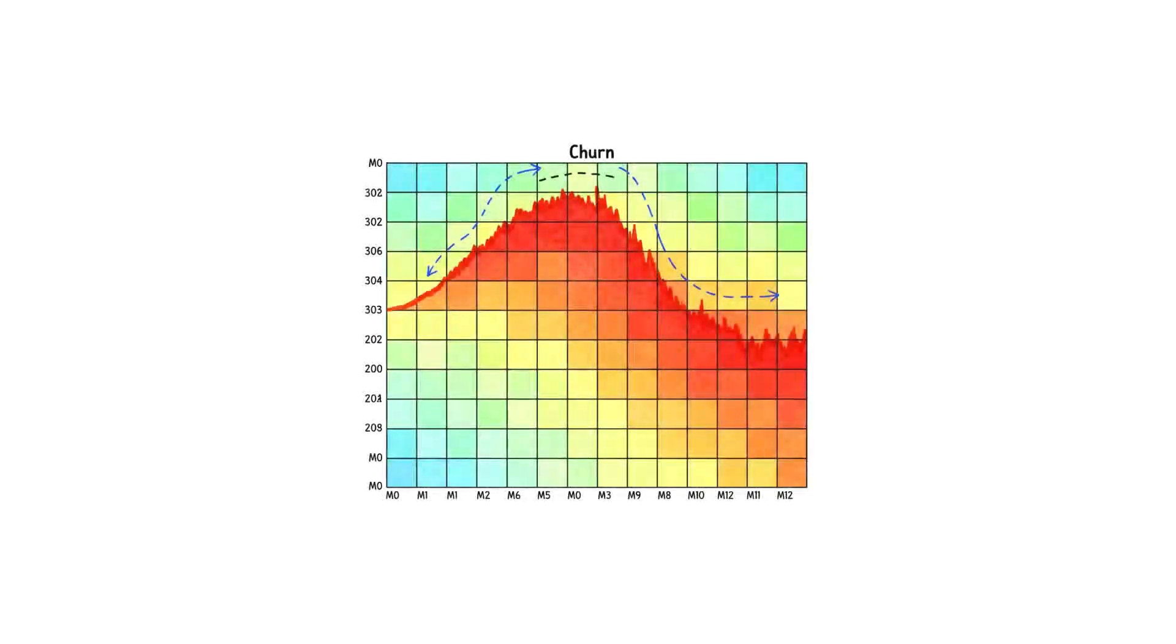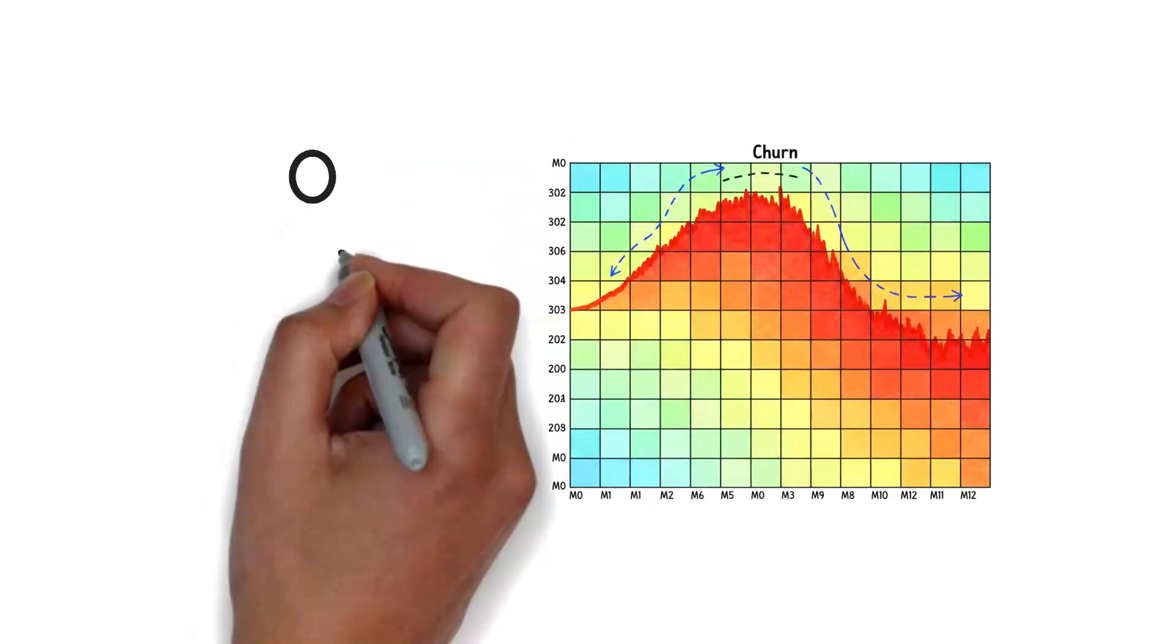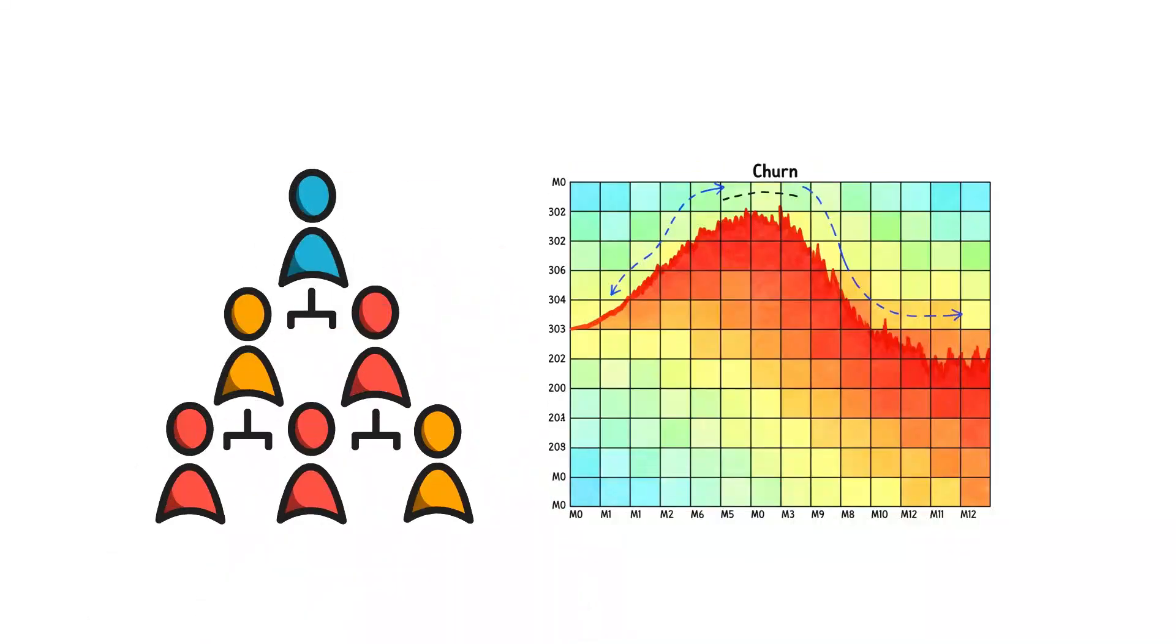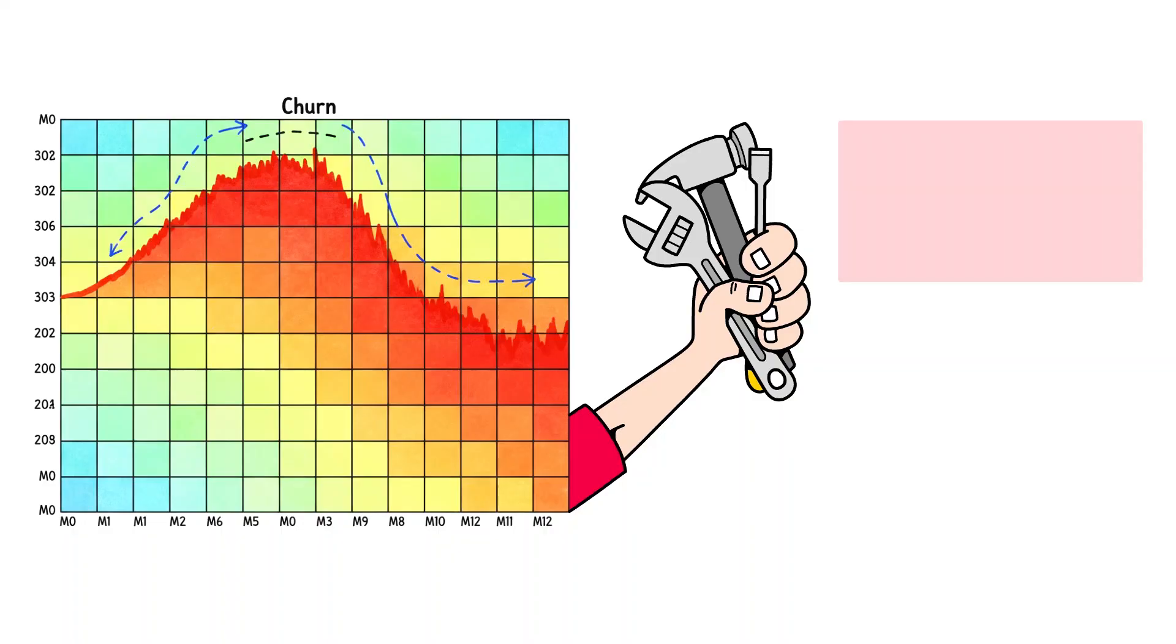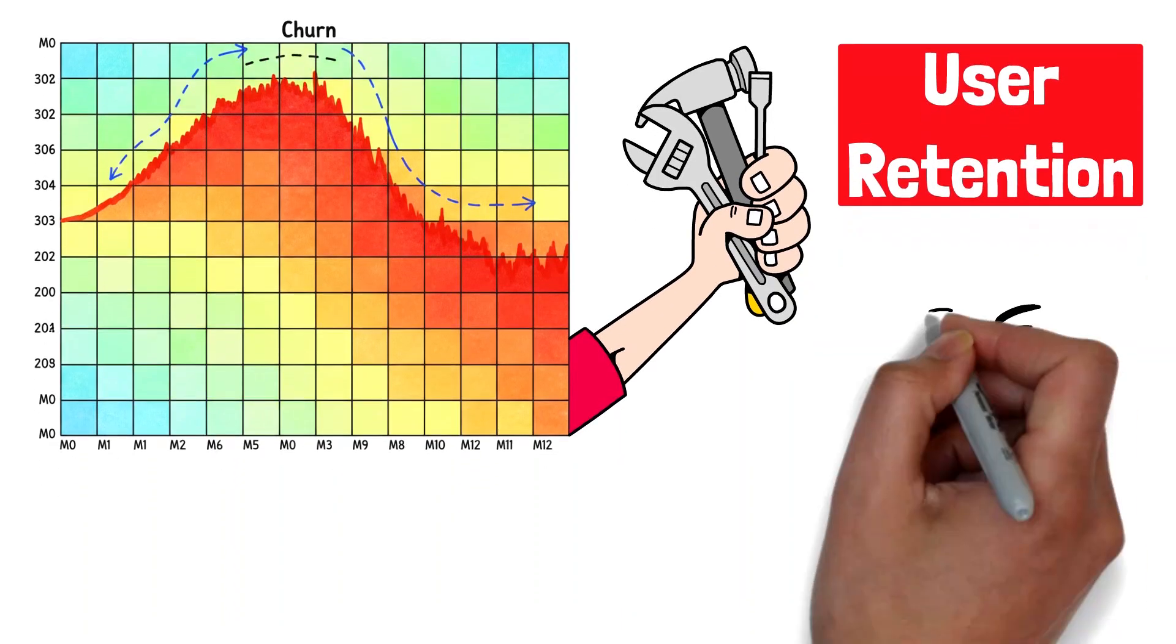Ever seen a chart like this? It looks like a heat map, but it's actually telling a story about your users. This is a cohort analysis, and it's one of the most powerful tools for understanding user retention. Today, we're breaking it down.